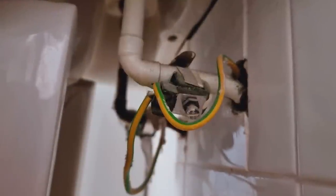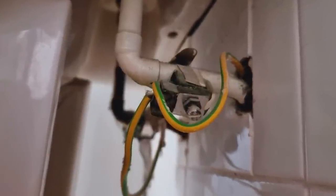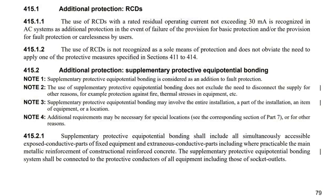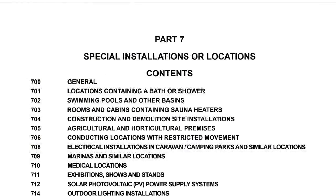At this point I think it would be a good idea to mention supplementary bonding, which is slightly different. Supplementary equipotential bonding is a method of providing additional protection against electric shock, and it is applied to both exposed and extraneous conductive parts. The requirements for this can be found in regulation 415.2 and in part 7 of BS7671 for special locations.